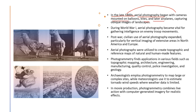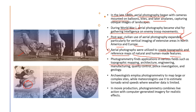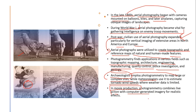In the late 1800s, aerial photography began with cameras mounted on balloons, kites, and airplanes — earlier cameras were even mounted on birds. This technology was revolutionized during World War One to gather intelligence on enemy movements. Post-war, aerial photography expanded across North America and Europe for topographic and reference mapping. Today it is used in architecture, engineering, manufacturing, quality control, police investigation, geology, archaeology, meteorology, and even movie production.